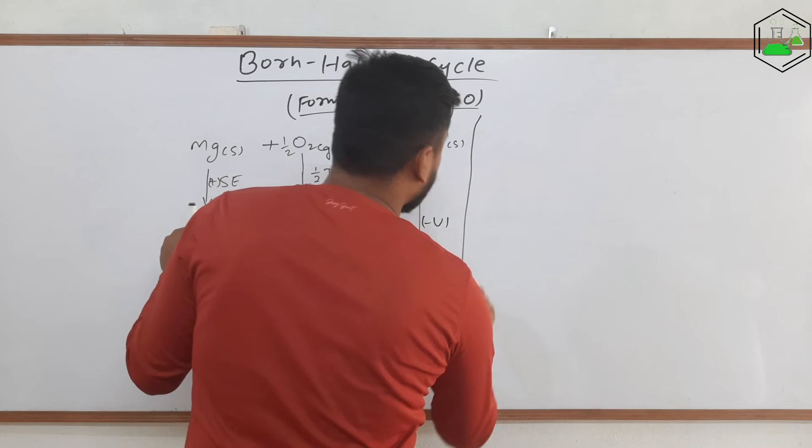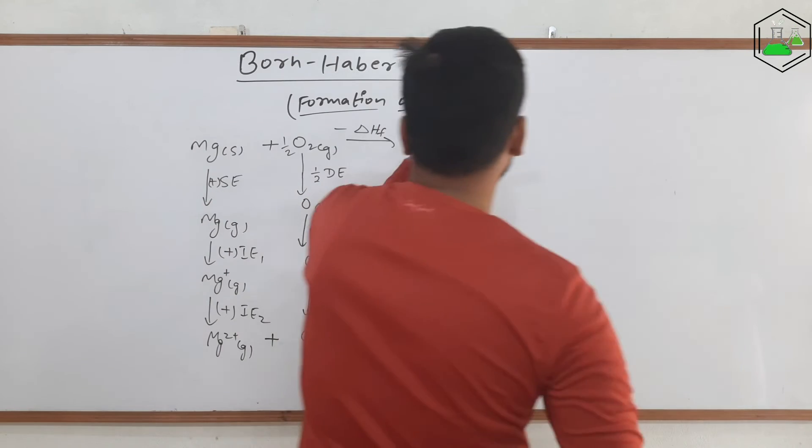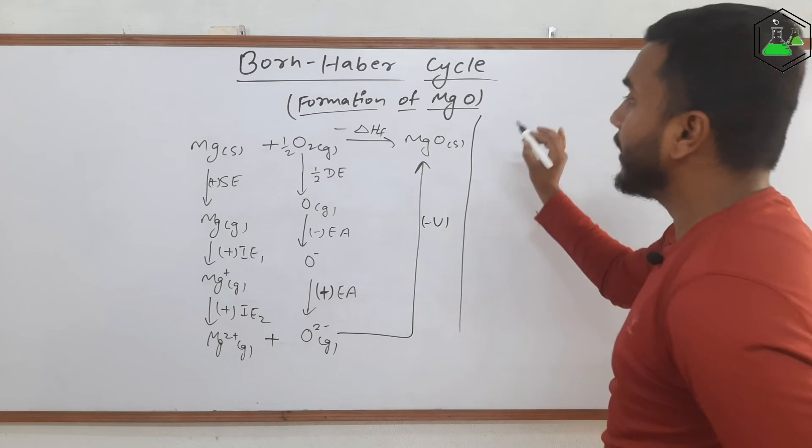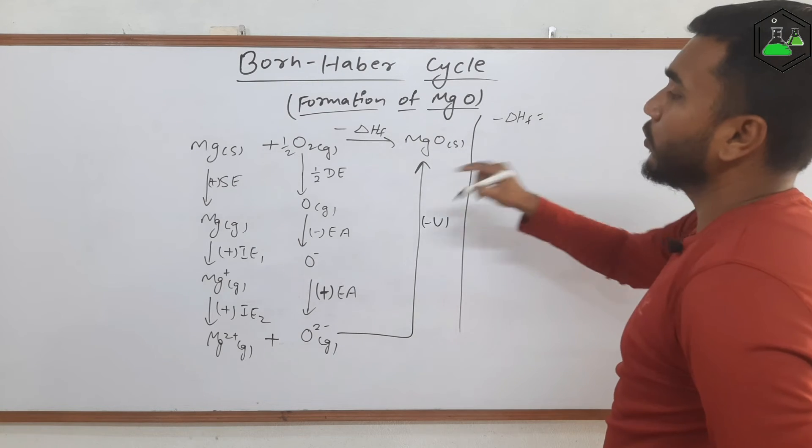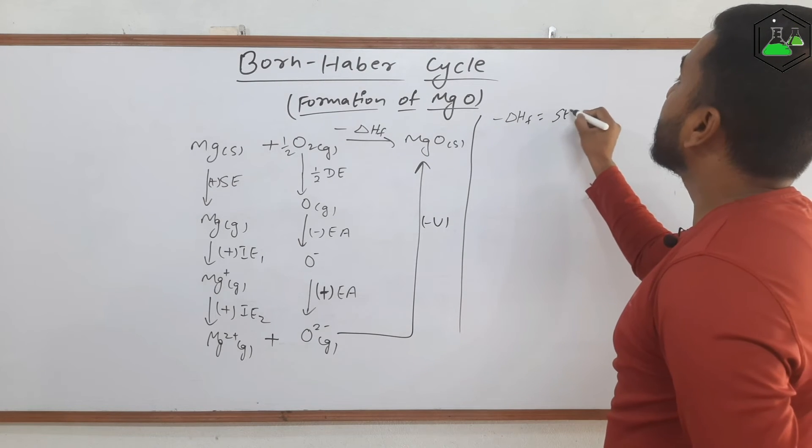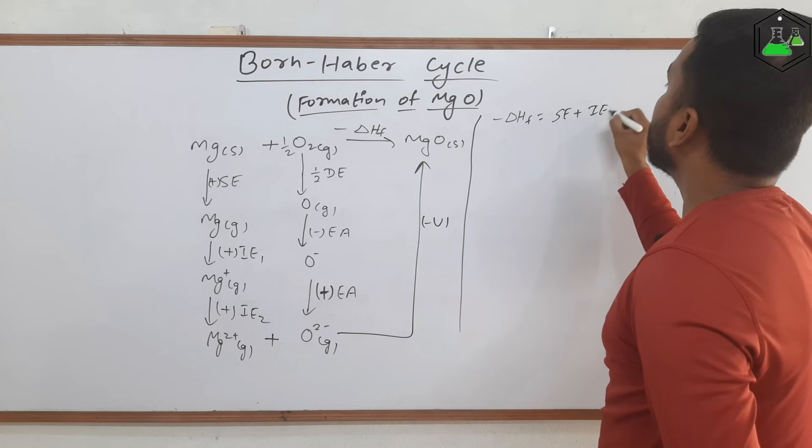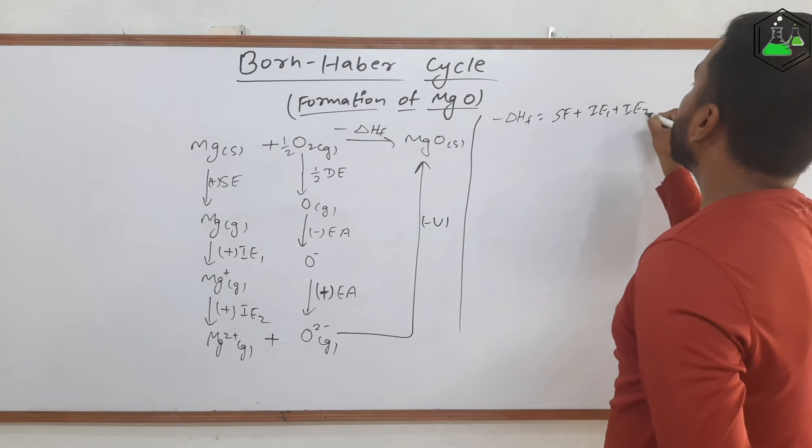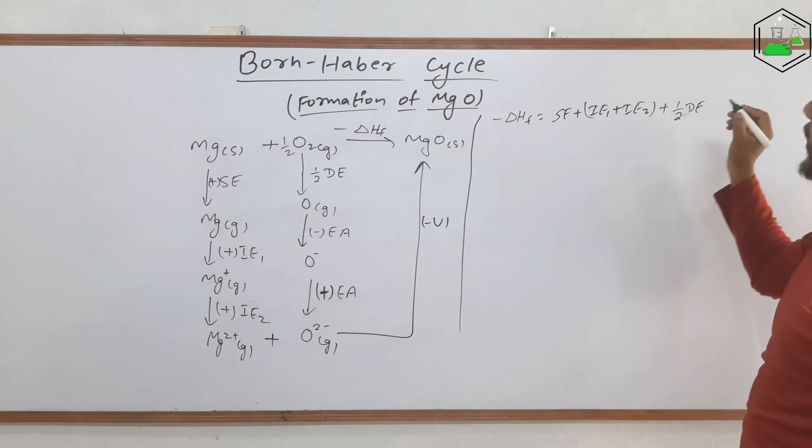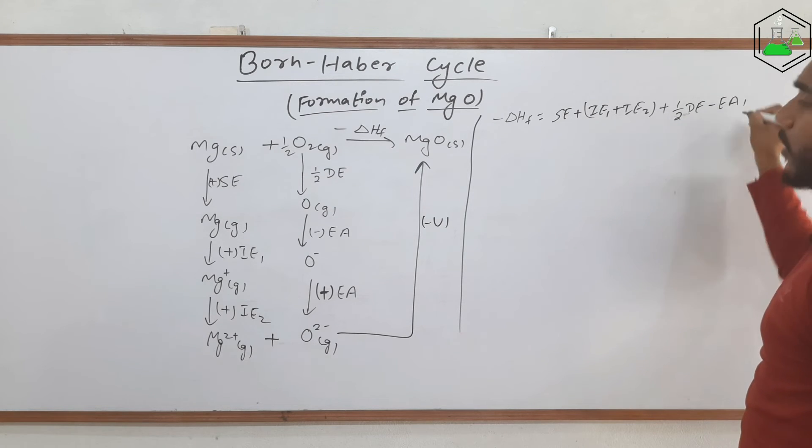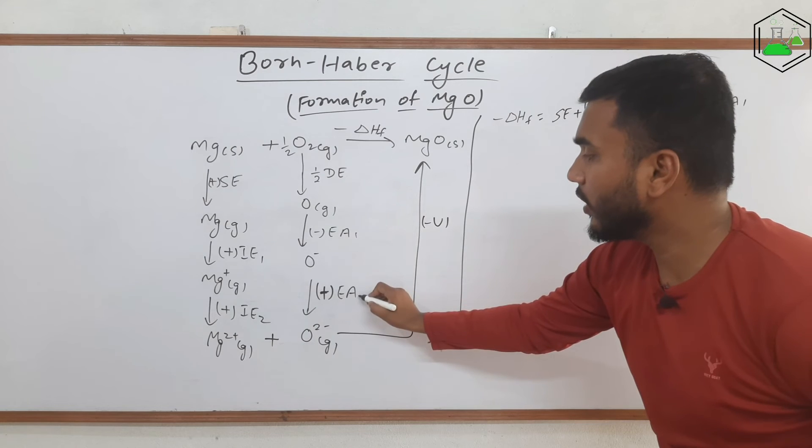Now the final expression for the Born-Haber cycle for the formation of magnesium oxide will be: -ΔHf = SE + IE1 + IE2 + (1/2)DE, DE means dissociation energy, minus EA1.